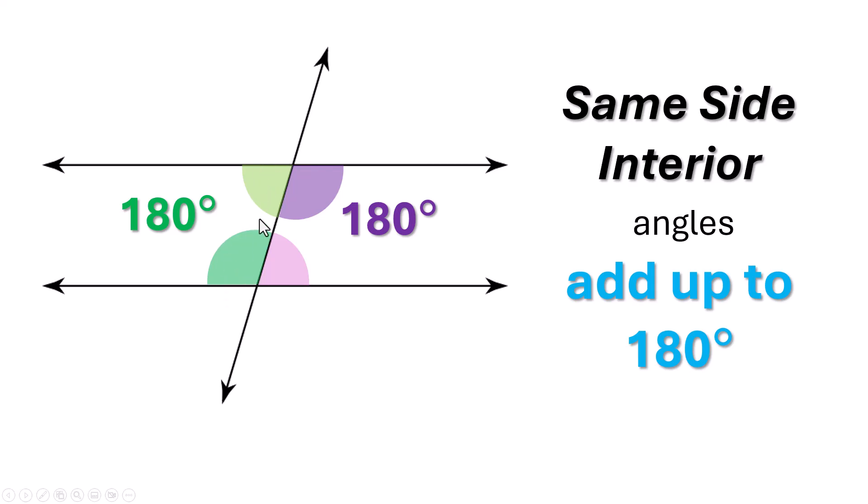If they're on the same side of the transversal and they are between the parallel lines, they're not equal to each other. One will be bigger and one will be smaller. All right, now if I take this green angle and just slide it down here, that's corresponding. So I know that these two are the same, but this is the proof of why they add up to 180. They make a straight line when you put them right next to each other.